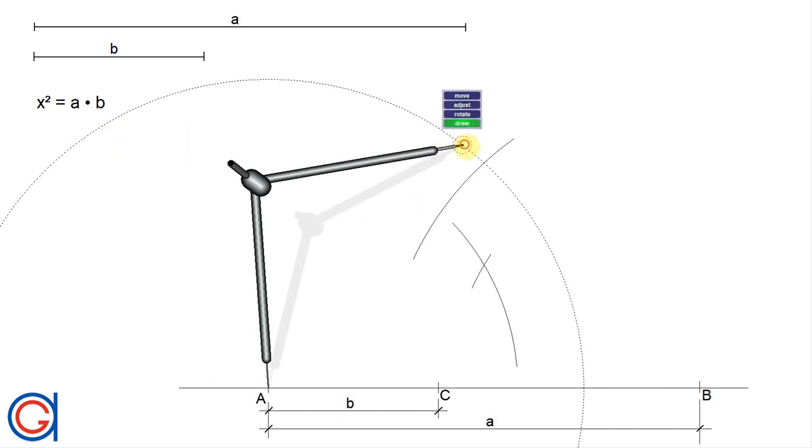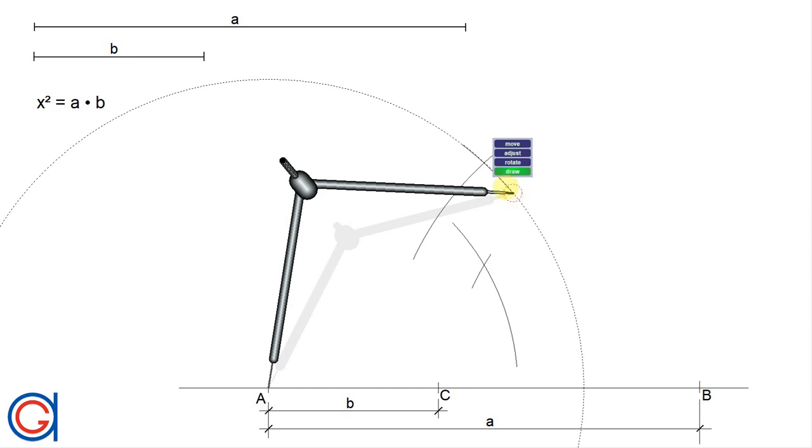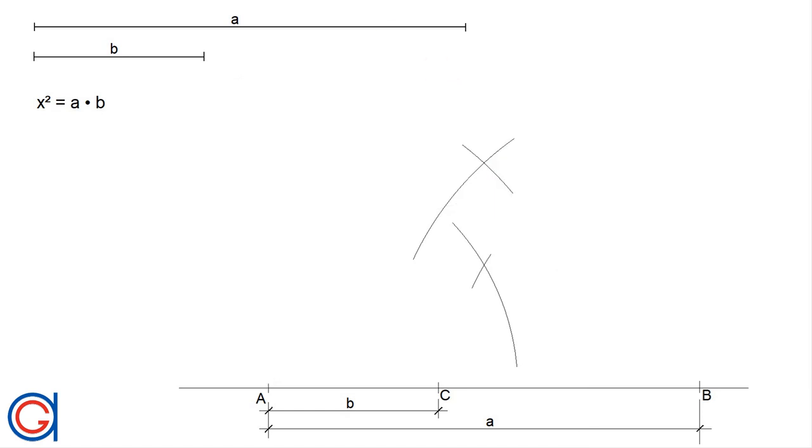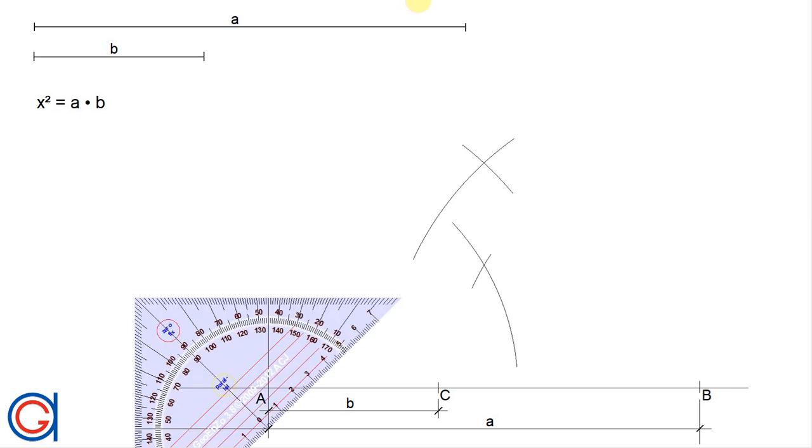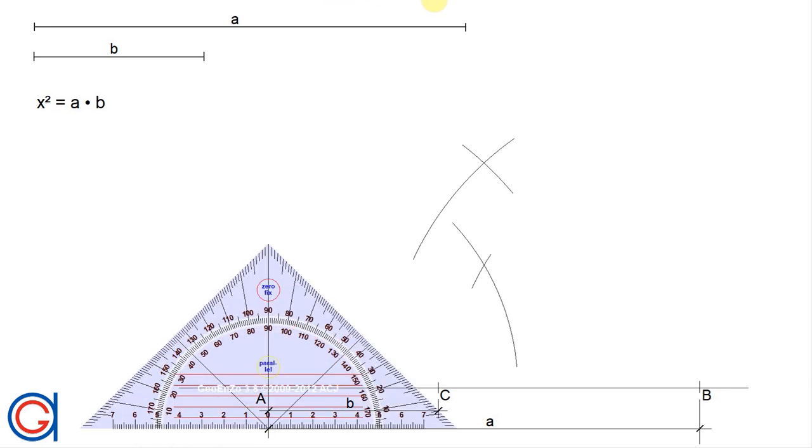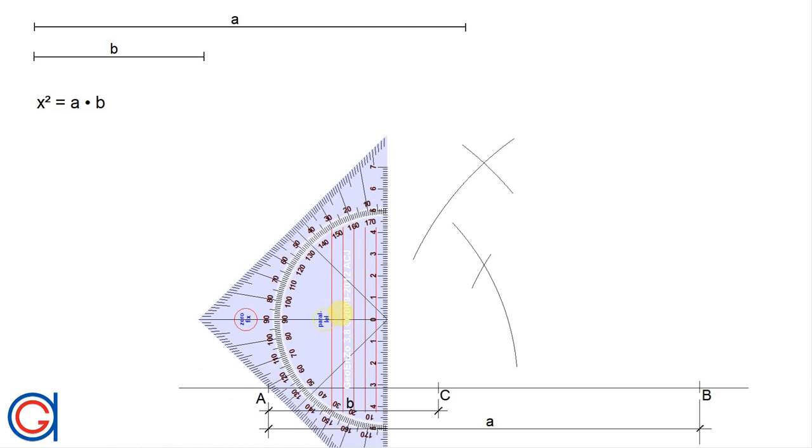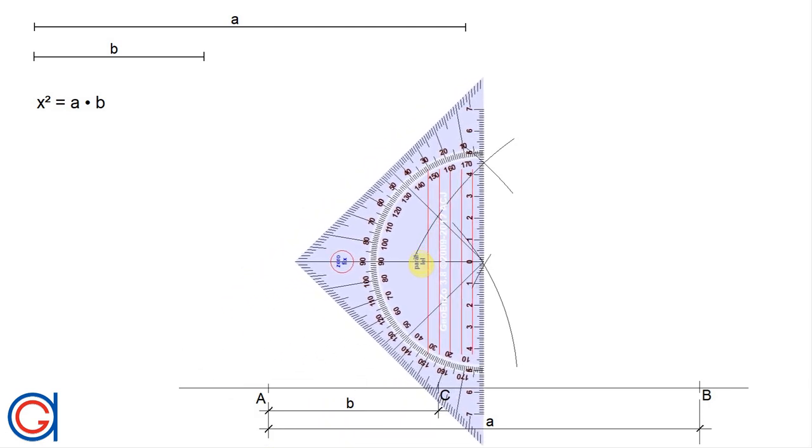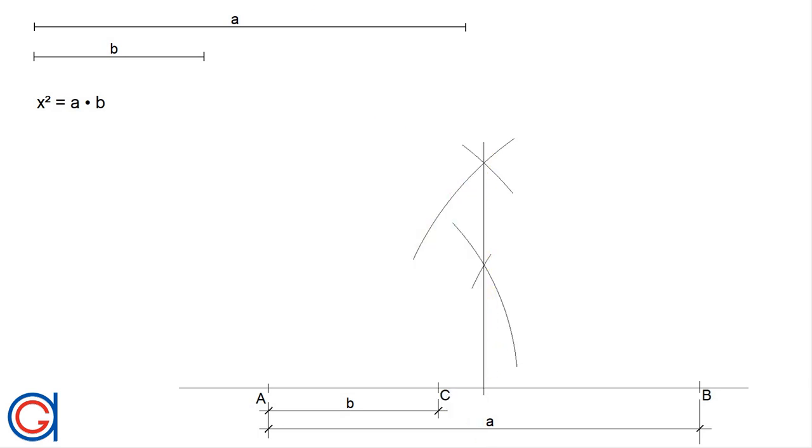Now we're going to draw a line from the horizontal line AB through these two intersections. So this is the perpendicular bisector of the line segment AB and we will get a new midpoint which we will call O.